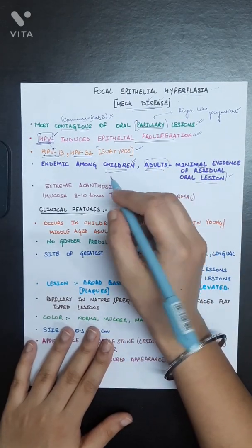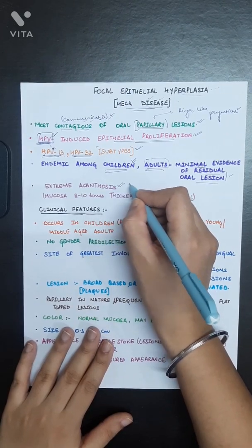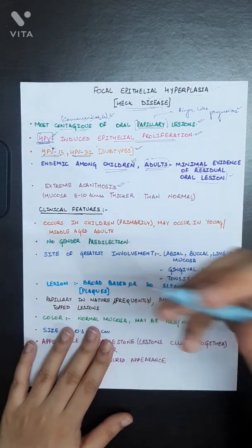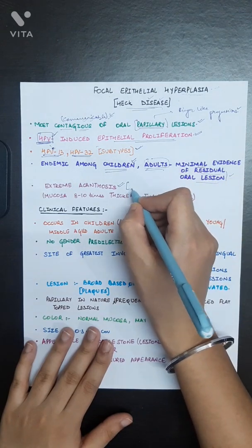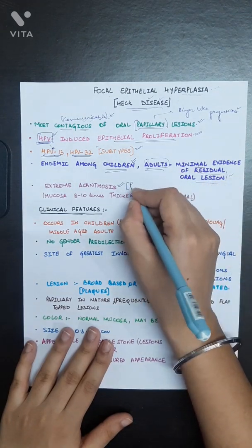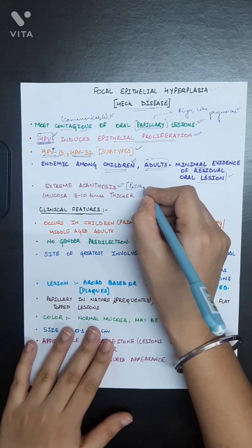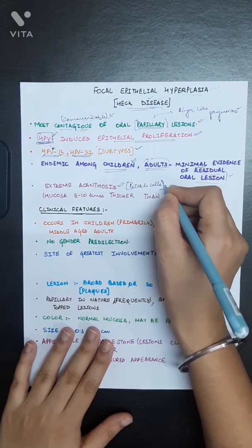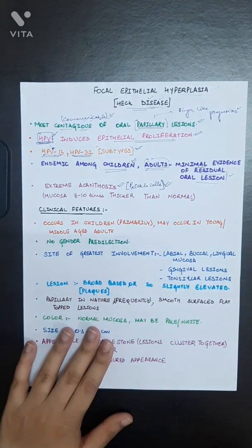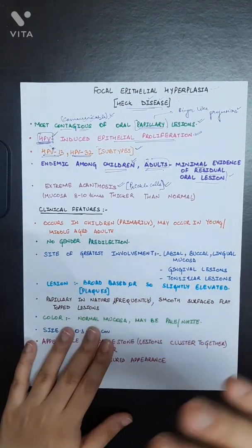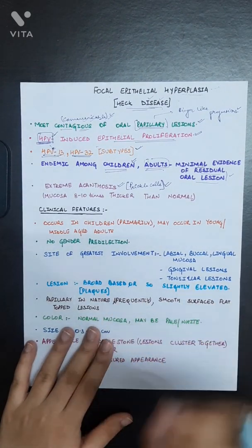In this condition there will be extreme acanthosis. Acanthosis means increase in the number of layers of epithelial cells, or more precisely the prickle cells present in the epithelium. These cells are increased in number.